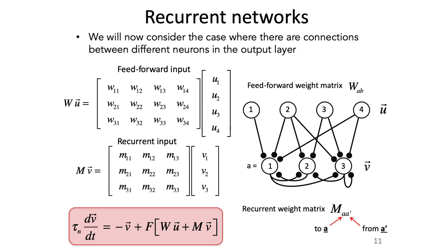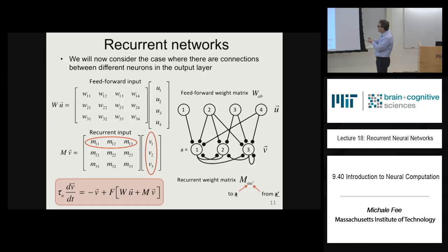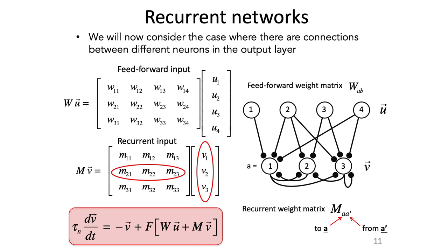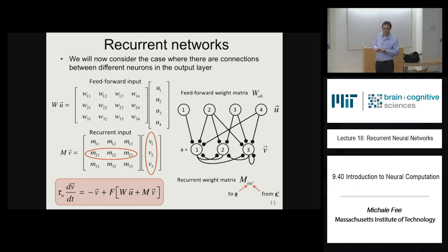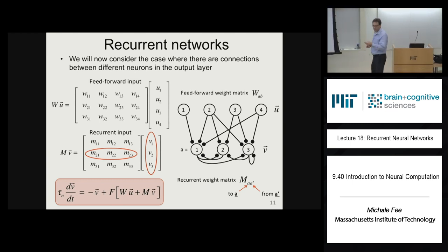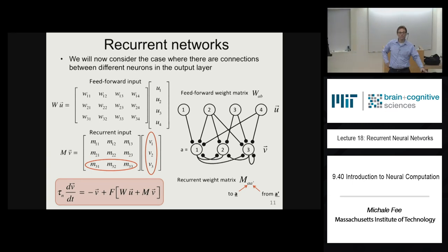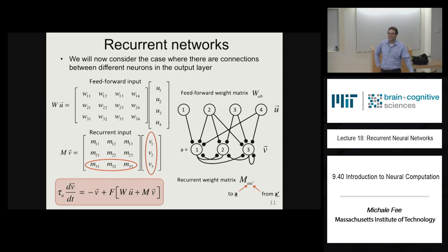Looking at the recurrent input to these neurons: the recurrent input to the first neuron is the dot product of that row of the recurrent weight matrix and the vector of firing rates in the output layer. The recurrent inputs to the second neuron is the dot product of the second row of the weight matrix with the firing rate vector. Note it's always post-pre ordering in the weight matrix, because we're writing firing rate vectors as column matrices.